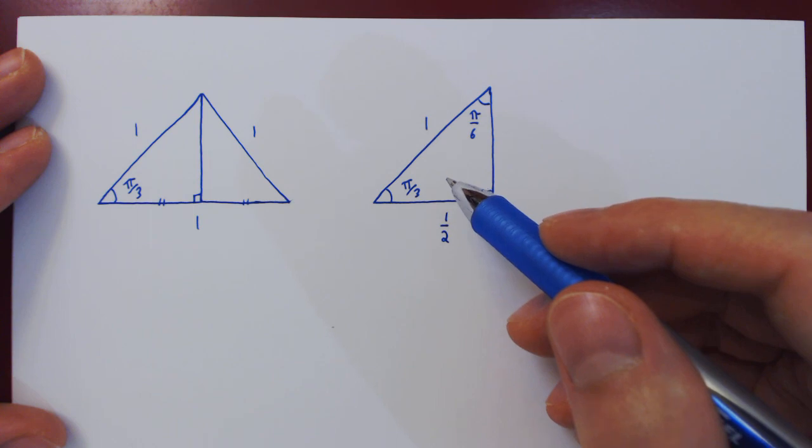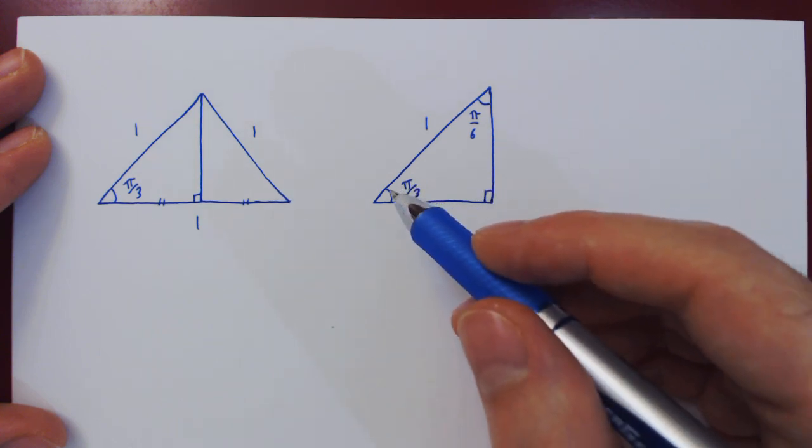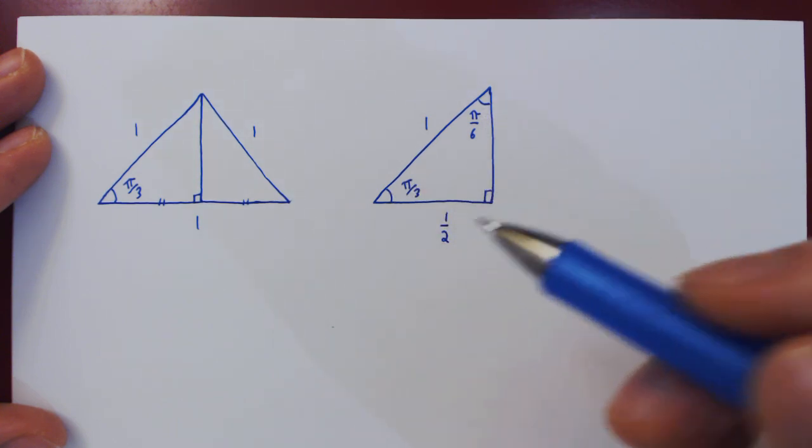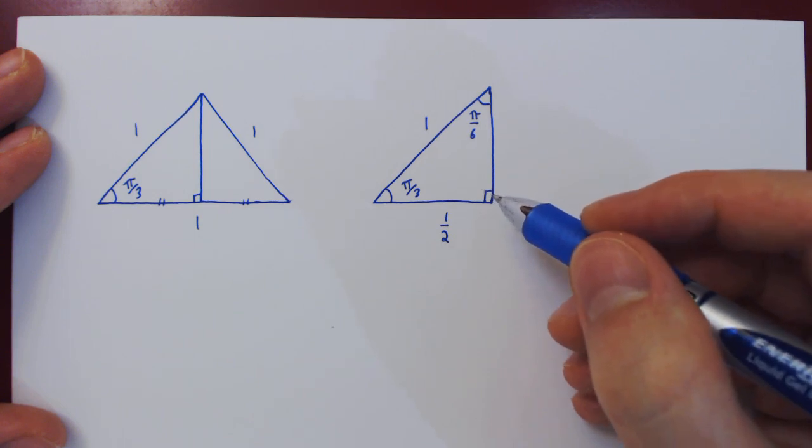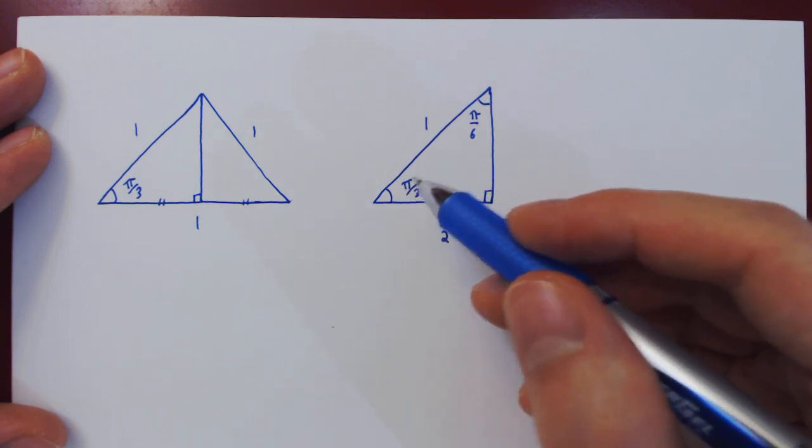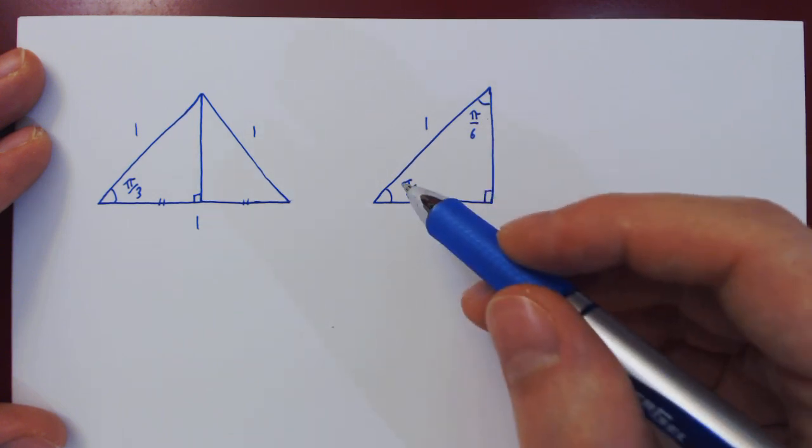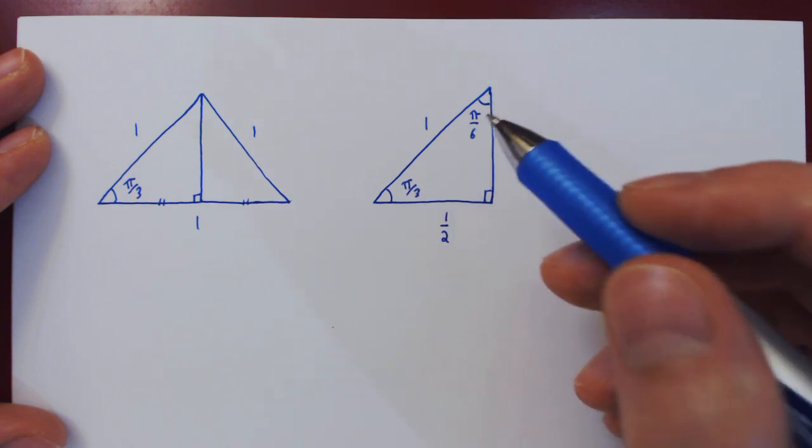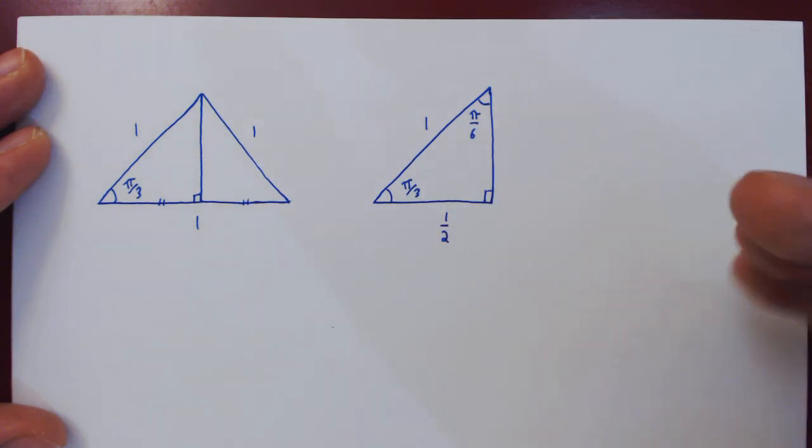You could also look at this again using the property that the sum of the interior angles of a triangle is π. Since this angle is π/2, these two have to add up to π/2. And π/3 plus π/6 is π/2. So everything checks out.